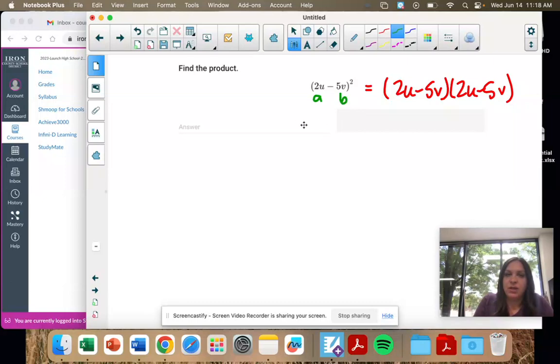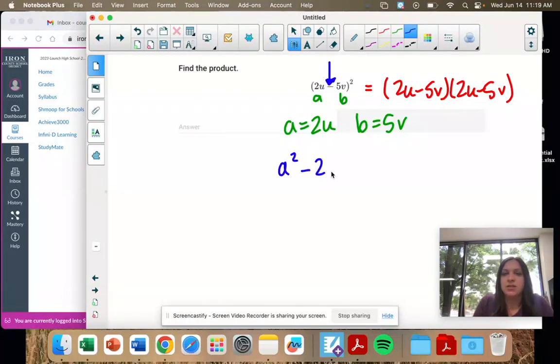So a and b, a is 2u, b is 5v. And then we're going to have a subtract in our answer. It's going to be a squared minus 2ab plus b squared. So that changes to a subtract when it's a subtract.